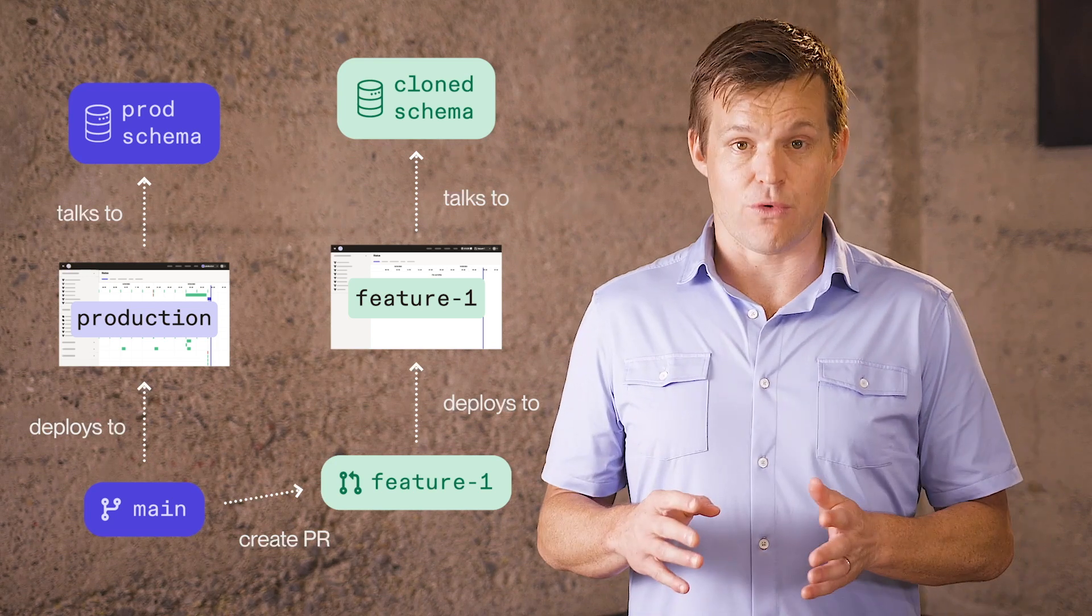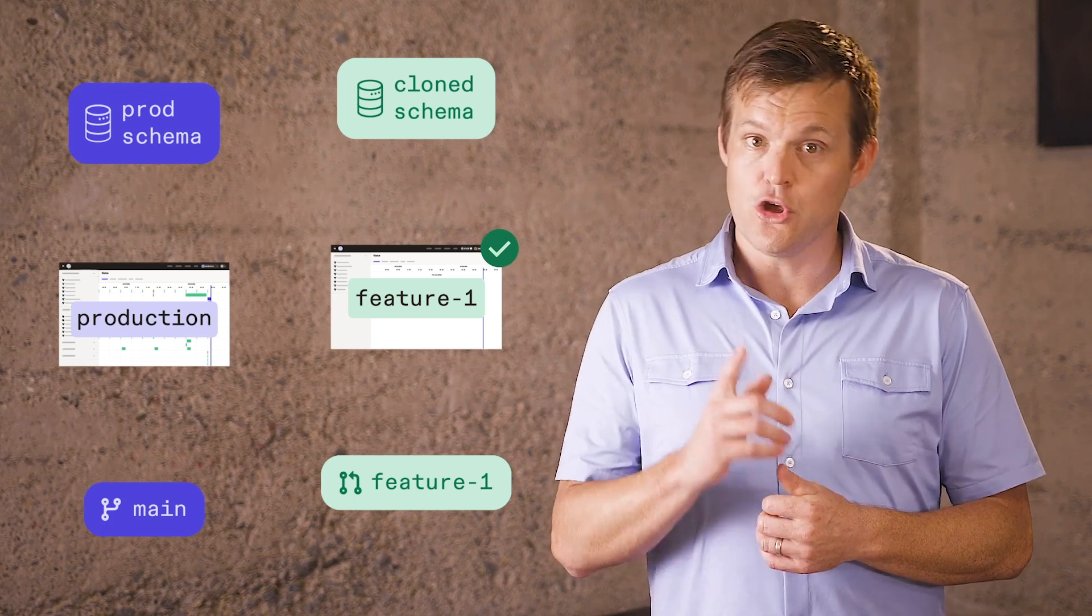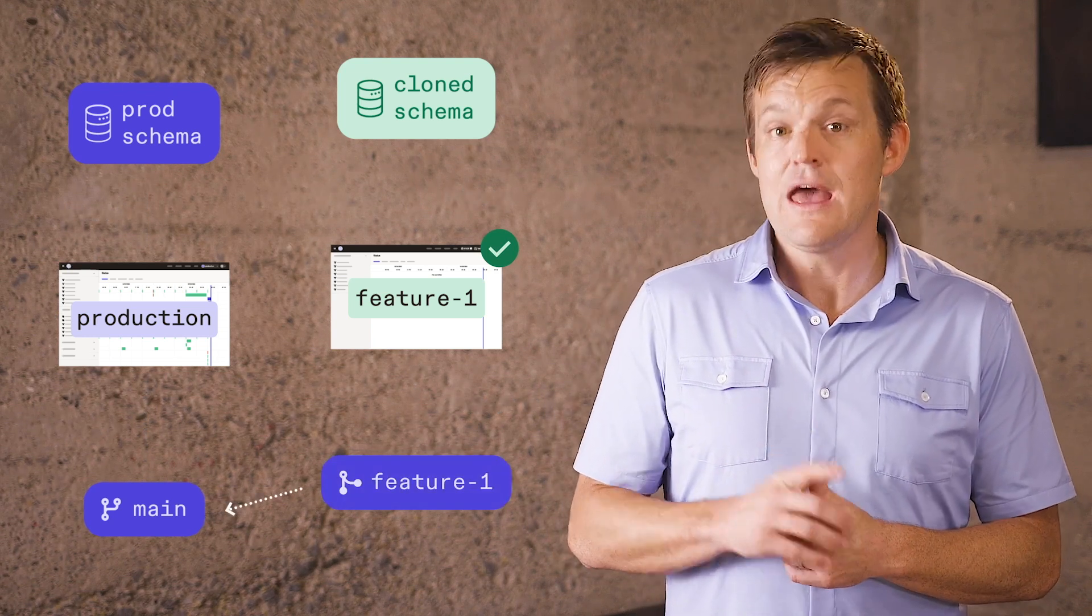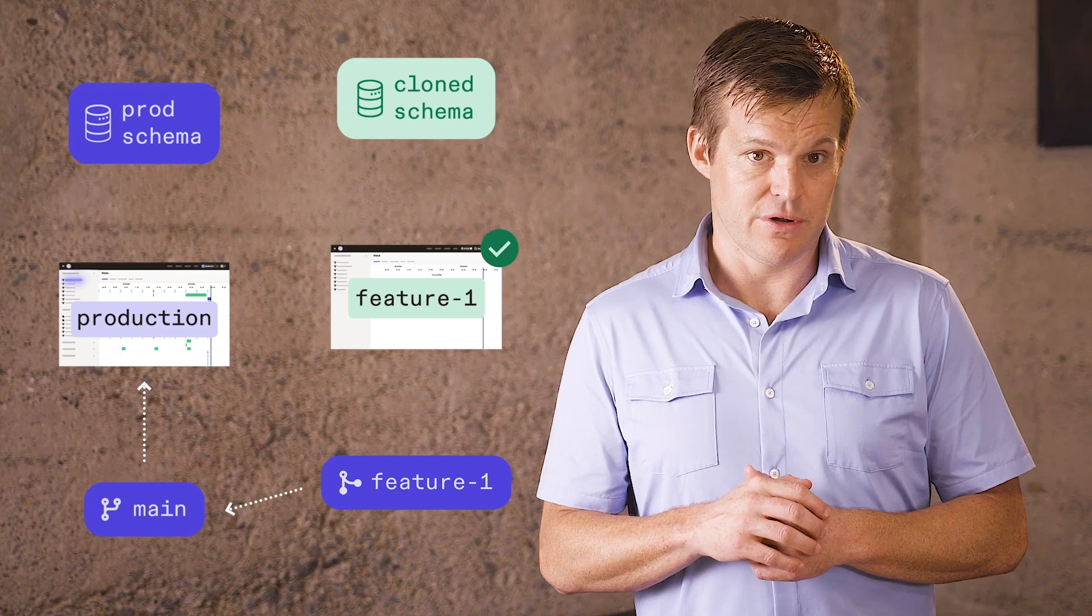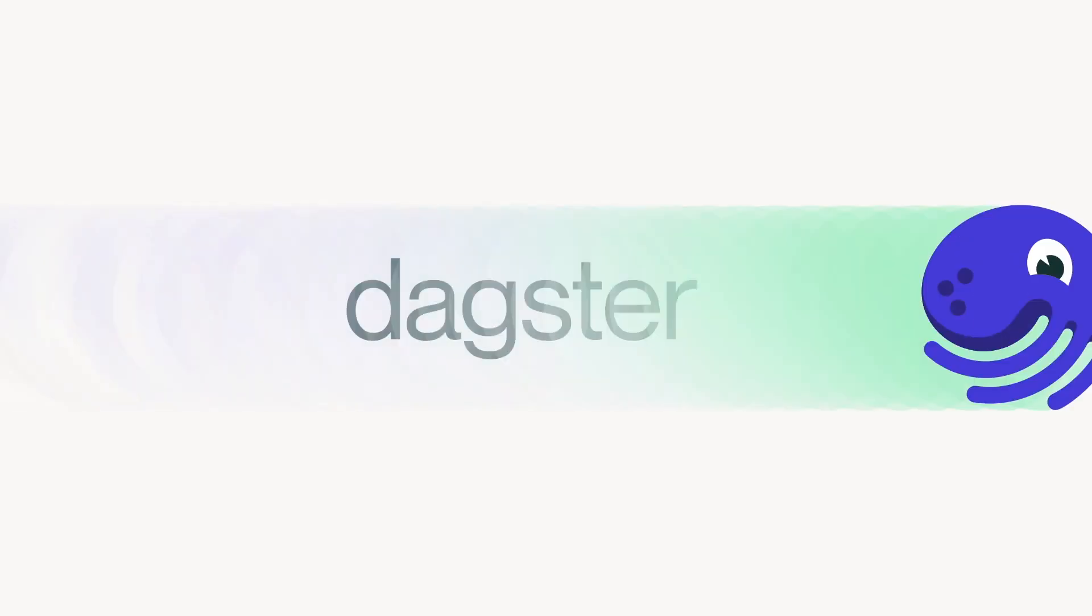When you have completed your work in your PR and validated your changes in the branch deployment, you merge your changes back to main, and then new code is deployed into production, and your branch deployment goes dormant.